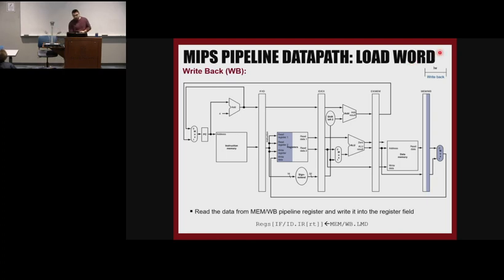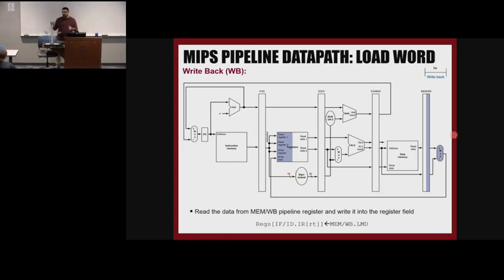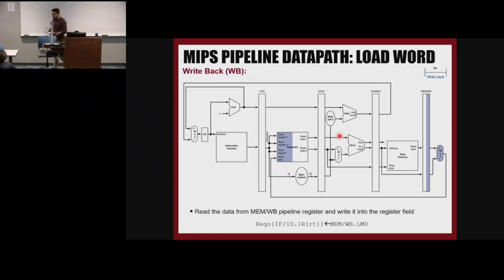When we got to the write back stage, we mentioned that such architecture can have a problem. In a pipeline processor, when we are in one stage — for example, write back for one instruction — other instructions are already sent into the pipeline. So when we are running load word, there can be another instruction in the decoding stage. If we want to write something back to the register file, the address of the register we want to write to is the address for the instruction in the decoding stage, not the write-back stage — which causes a problem.